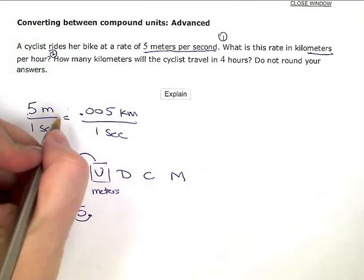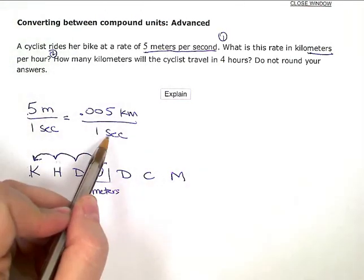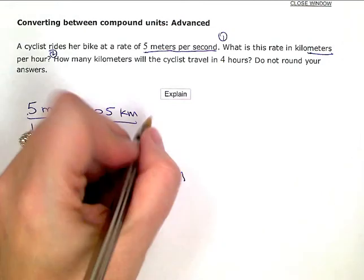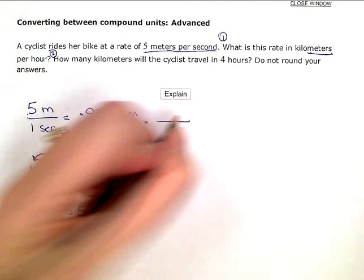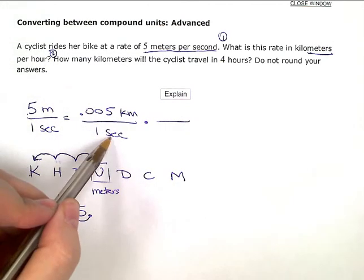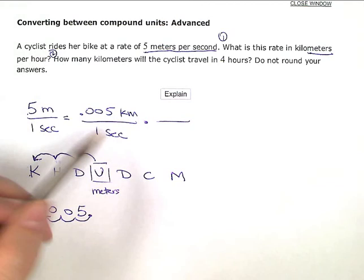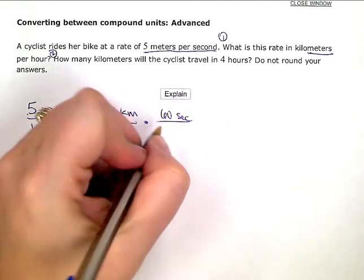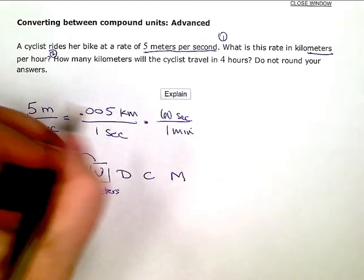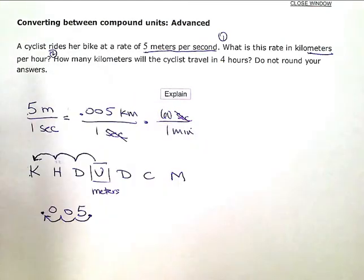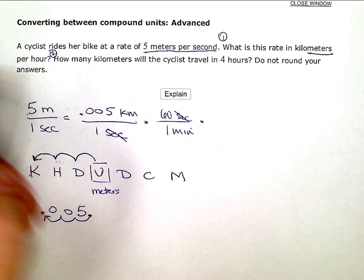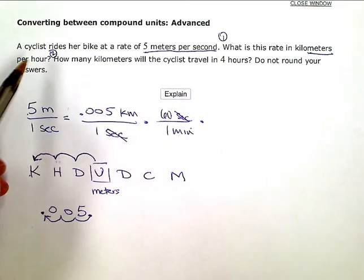So now I'm going to take this and the seconds and convert it to hours. So now I'm going to multiply by some conversion ratios. So seconds, I know that there are 60 seconds in one minute. And I put the seconds on top here so that it would cancel with the seconds in the denominator there. But I'm still not there.